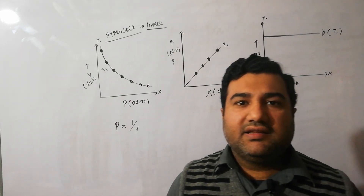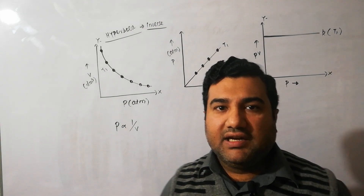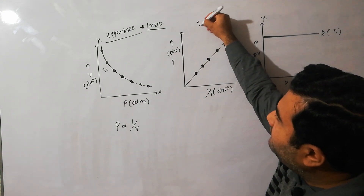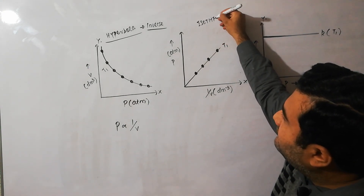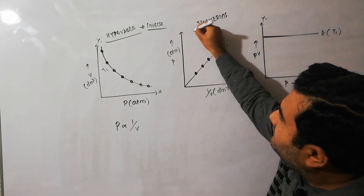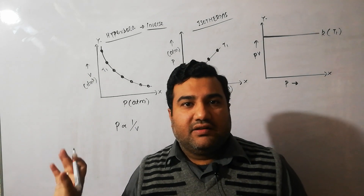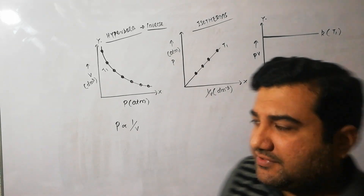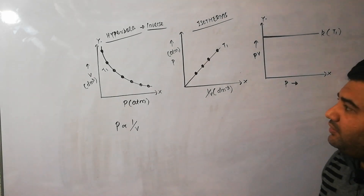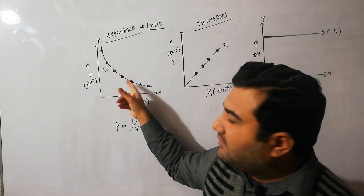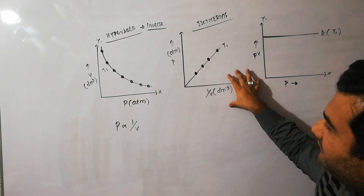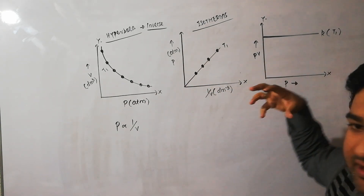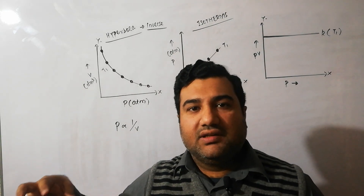The gas was studied at constant temperature T1 and three graphs were made. Because they are made at constant temperature, these graphs are called isotherms. All three graphs of Boyle's Law are called isotherms. In the first graph you get a hyperbolic curve; in the second graph you get a straight line; and in the third graph you also get a straight line, but this straight line is parallel to the x-axis.